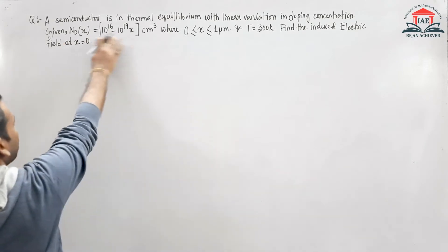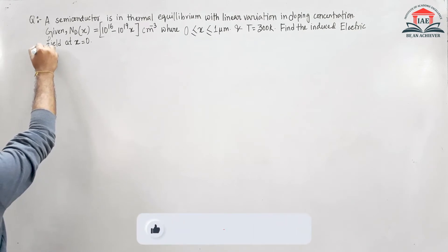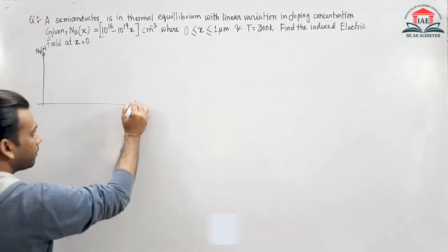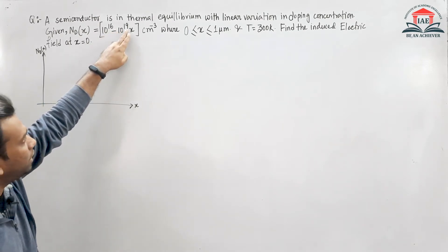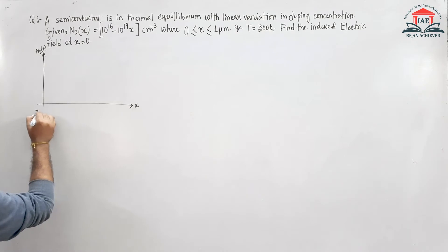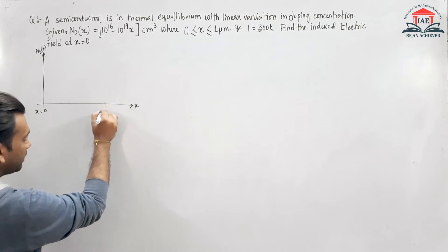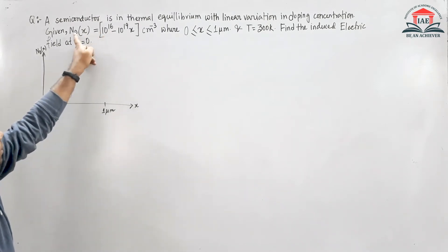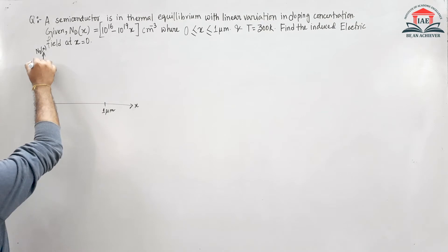If we draw the variation of Nd(x), the variation will be 10^16 - 10^19 * x. At x = 0, the value of Nd(x) is 10^16 only. So at x = 0, we have 10^16.